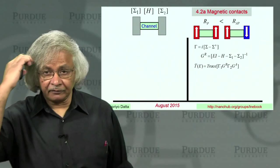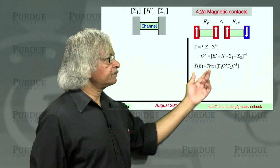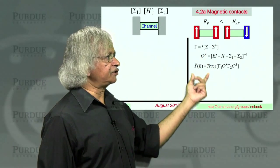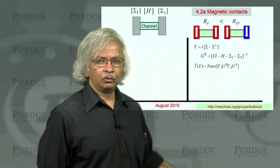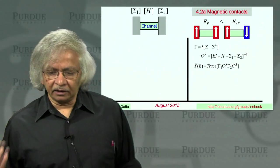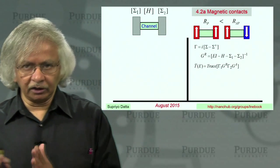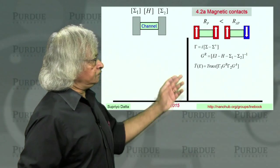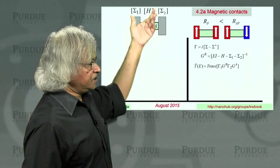We are not worrying about interactions within the channel. And so you can calculate this retarded Green's function from which you can get the transmission, which is like the conductance normalized to the quantum of conductance. Now, so how would we write down these matrices?